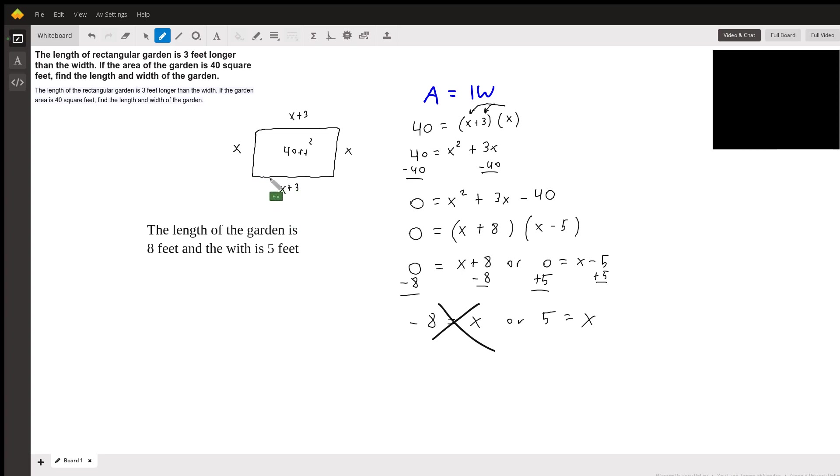We don't know the width or the length, but we do know that the length is three feet longer than the width. So just call the width X and the length X plus three. You know that the area is 40 feet squared, so I just put 40 feet squared in the middle of the rectangle here.